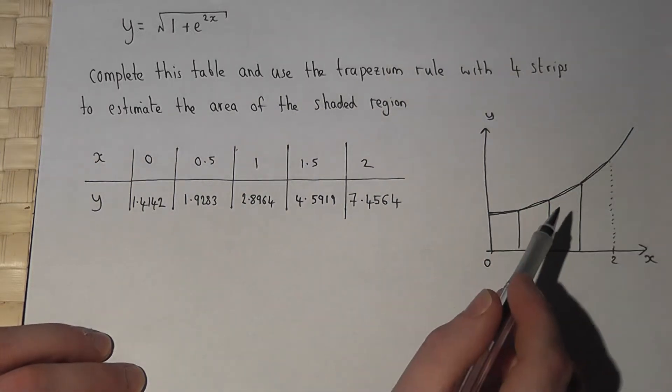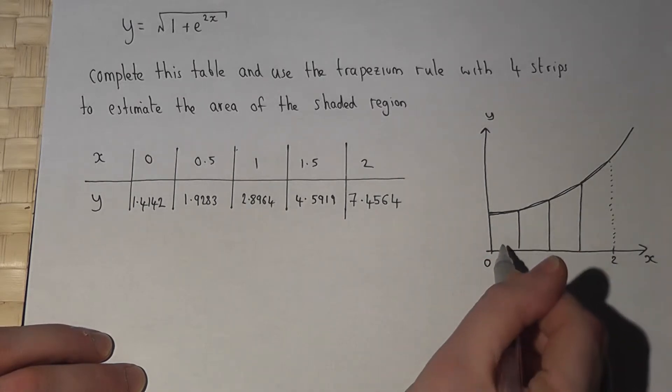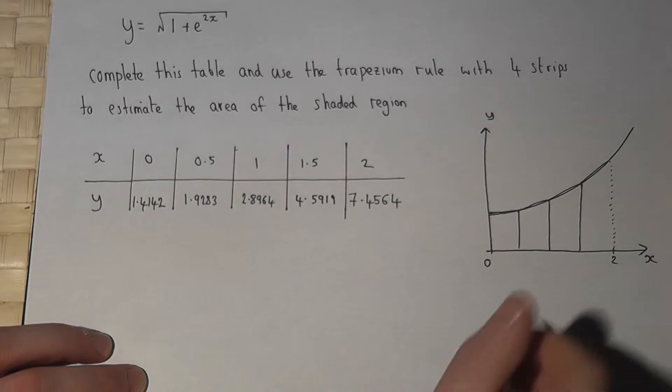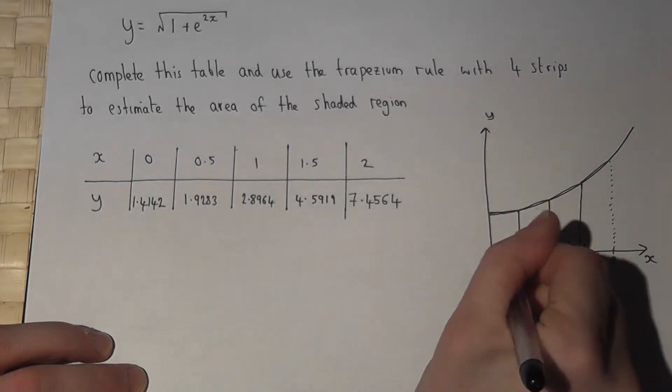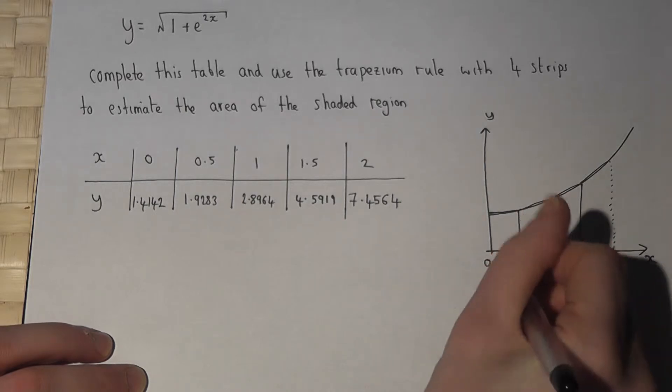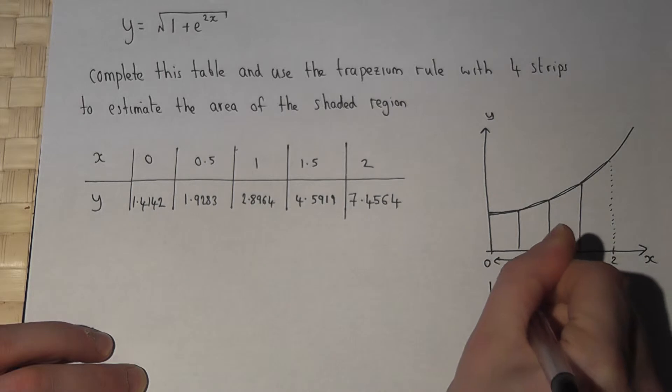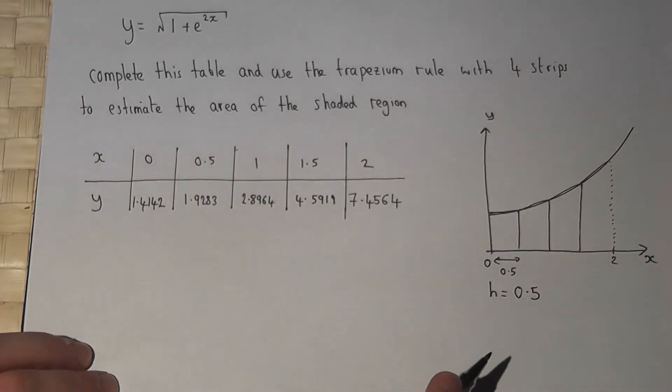It will be an overestimate but it should be fairly close to the true area. Now then, these four trapeziums all have a width of 2 divided by 4 which is 0.5, and that is h. So h is 0.5.